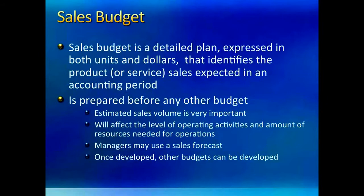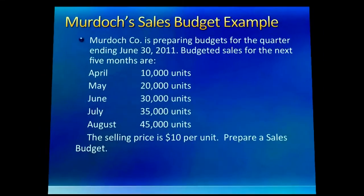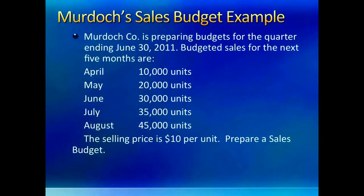Once we know the units to be sold, we can decide how much production to do, how much material to buy, etc. For the Murdoch company, we are given estimated unit sales for 5 months and the price at which they will be sold. We need a sales budget for the quarter ending June 30th, meaning we need sales of April, May, and June only to get total estimated sales for the quarter. You may wonder why July and August sales numbers are given — you will get the answer very soon. All we need to do is multiply the budgeted sales units by the price per unit.